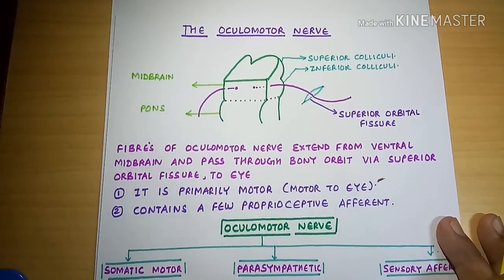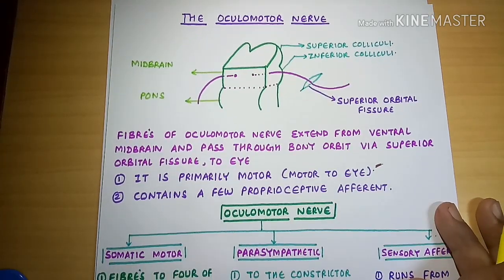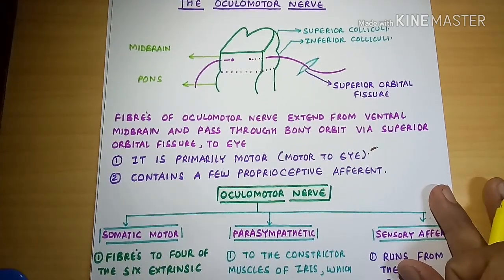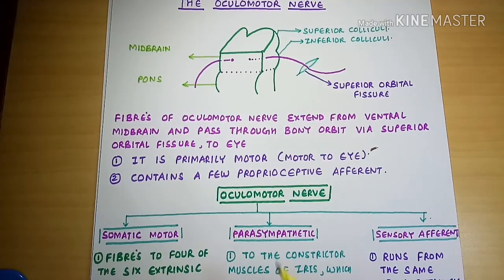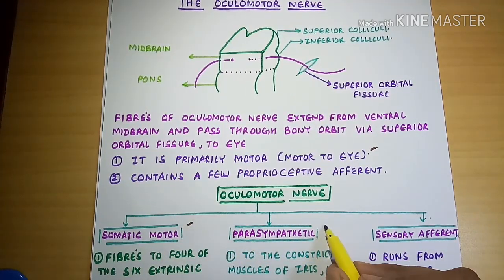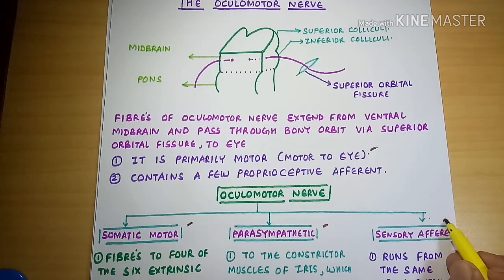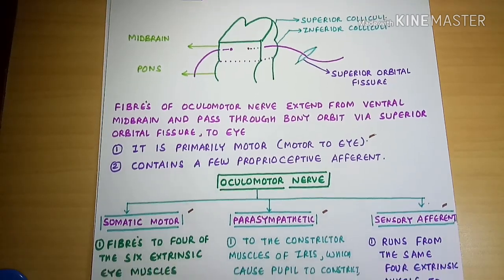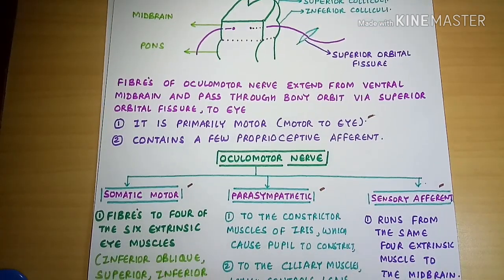The oculomotor nerve has three divisions: the somatic motor division, the parasympathetic division, and the sensory afferent division.